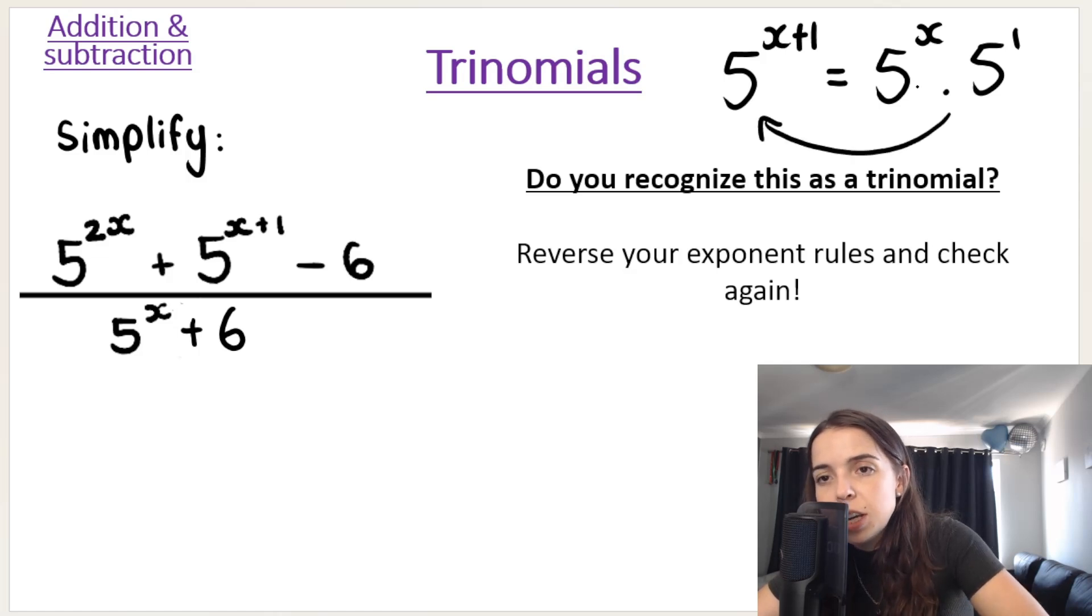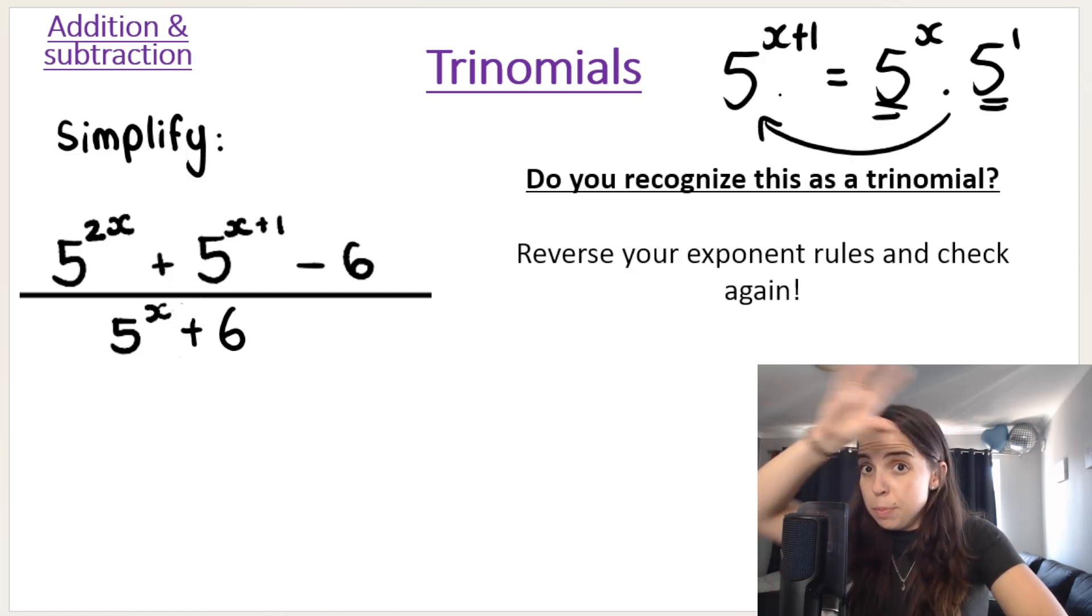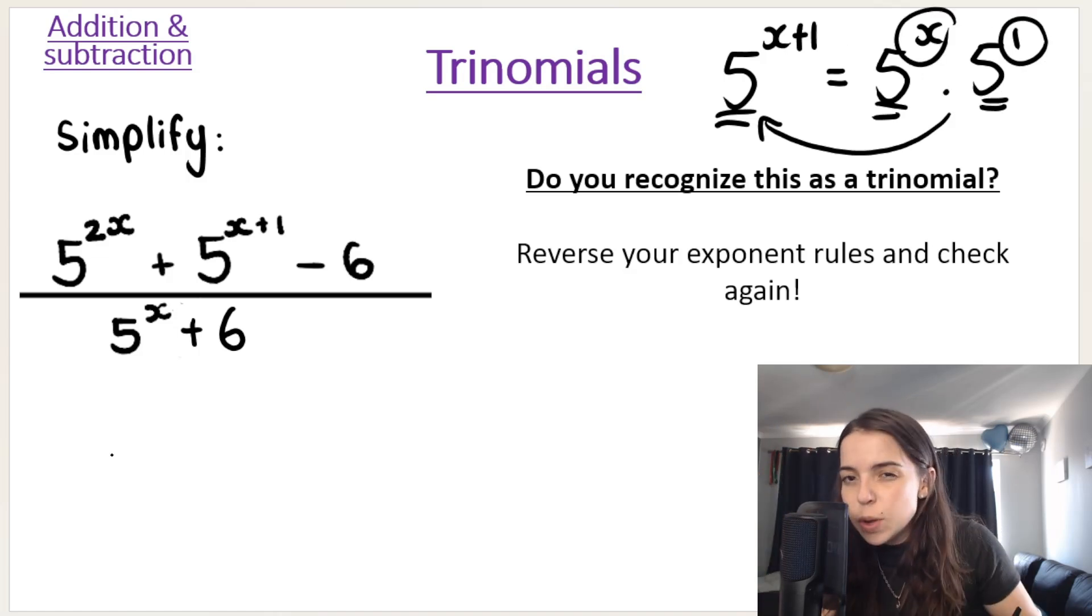Because if you had to reverse it here, the bases are the same. So you keep the base, you write it once and you add the exponents because I'm multiplying. So that's what I mean by reverse the exponent rules. So see if you can try it.